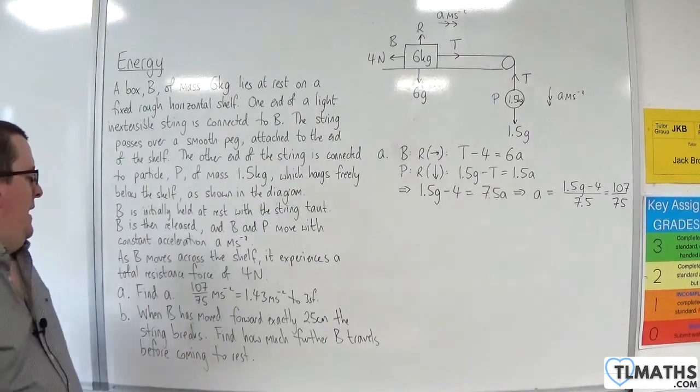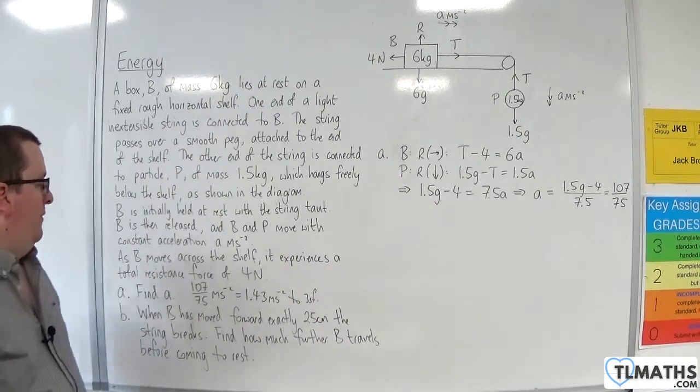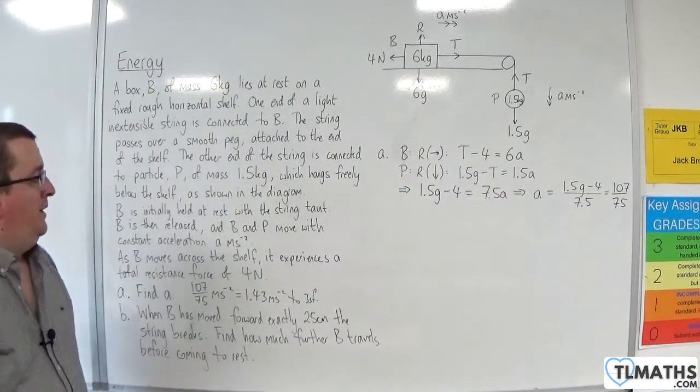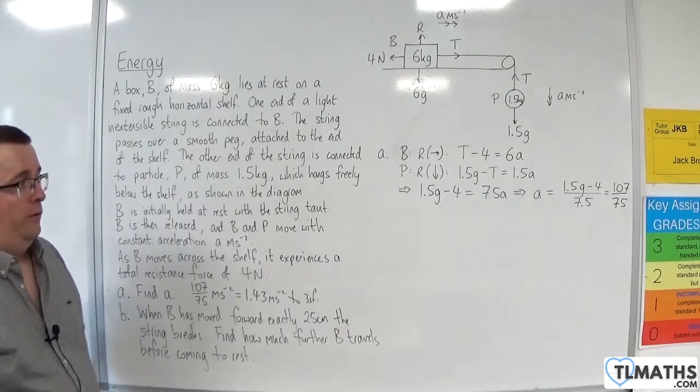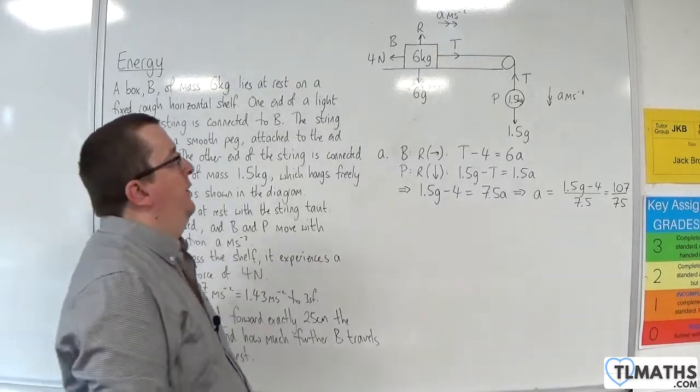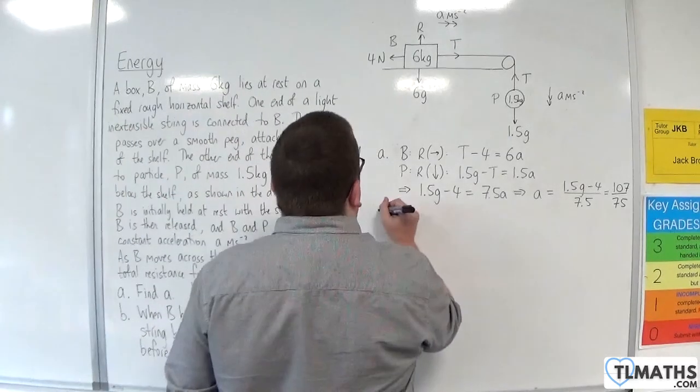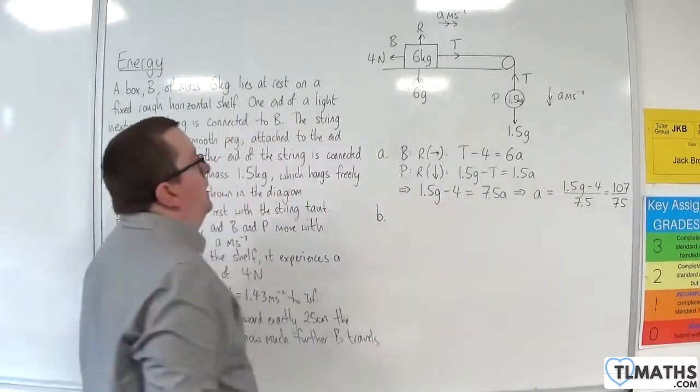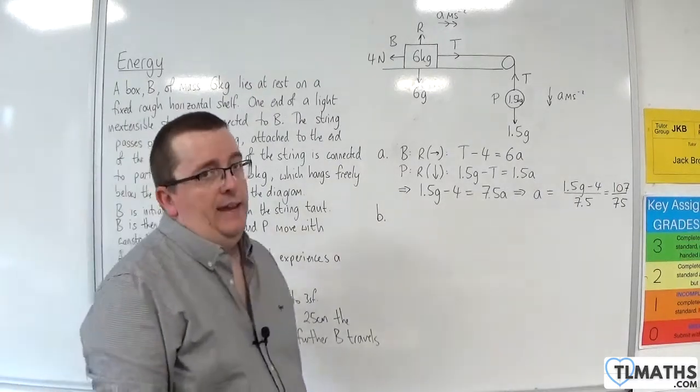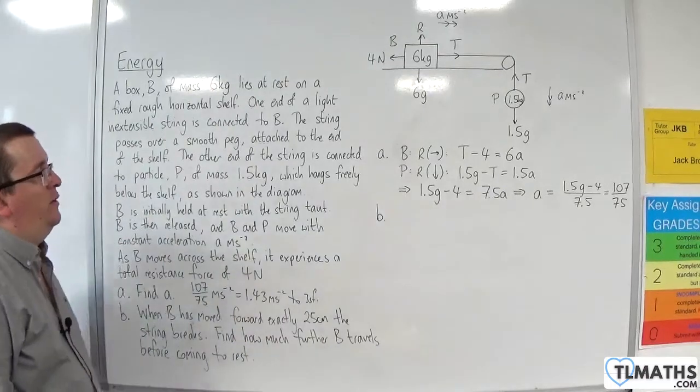So, part B. When B has moved forward exactly 25 centimetres, the string breaks. Find how much further B travels before coming to rest. Of course, we could use SUVAT to do that. Of course, I'm going to be using an energy method for this. So, what I do need is I'm going to need T. OK, I'm going to need to know what the tension is.